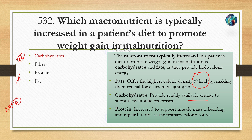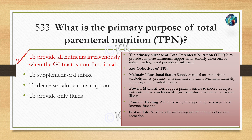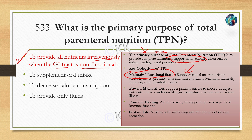What is the primary purpose of total parenteral nutrition? Option A: to provide all nutrients intravenously when the GI tract is non-functional, Option B: to supplement oral intake, Option C: to decrease calorie consumption, Option D: to provide only fluids. The correct answer is Option A. The primary purpose of TPN is to provide complete nutritional support when the patient is unable to take food through the mouth because the GI tract is non-functional. It also prevents malnutrition.